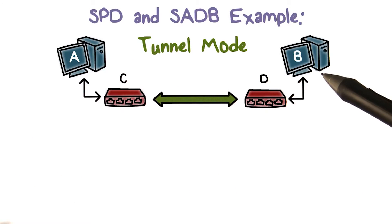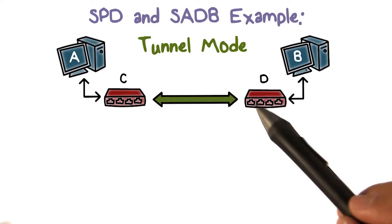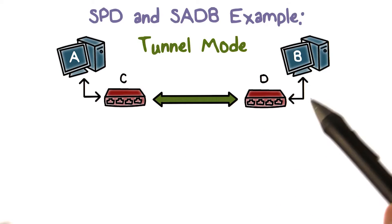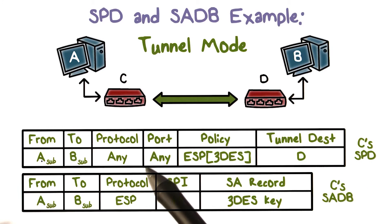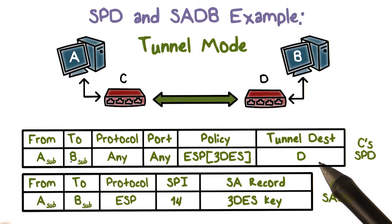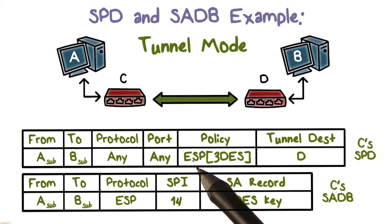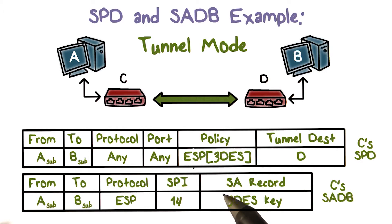Now let's take a look at the tunnel mode traffic from the subnet that A belongs to, to the subnet that B belongs to. Suppose the policy says that for any traffic from A's subnet to B's subnet, the tunnel destination is B's gateway, which is D, and the data should be encrypted. Therefore, ESP should be used.